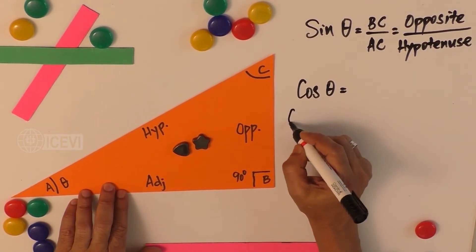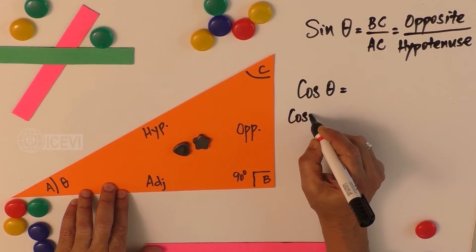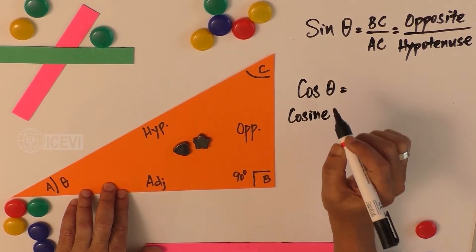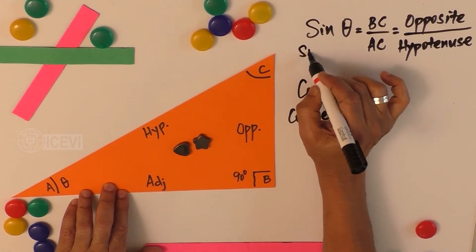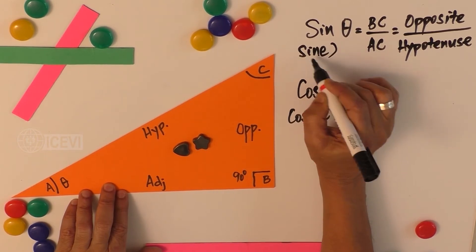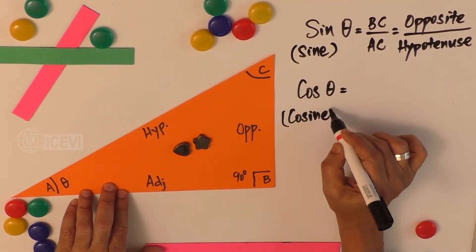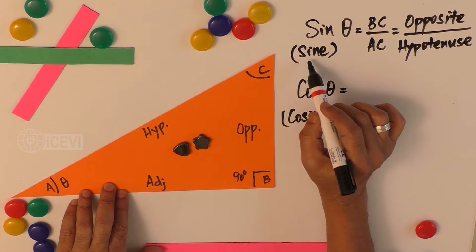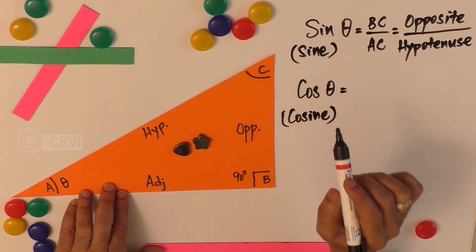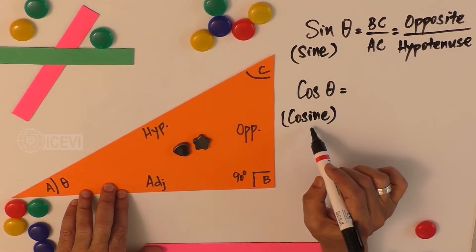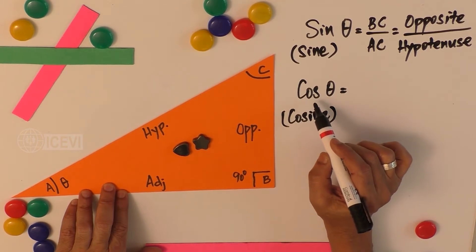The full form is cosine (C-O-S-I-N-E), similarly sine (S-I-N-E). The short form of sine is sin (S-I-N). The short form of cosine is cos (C-O-S).